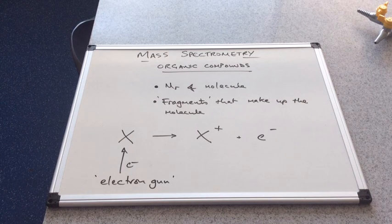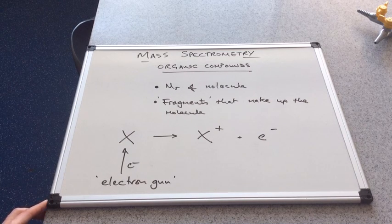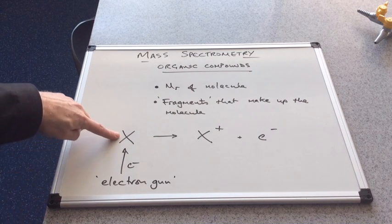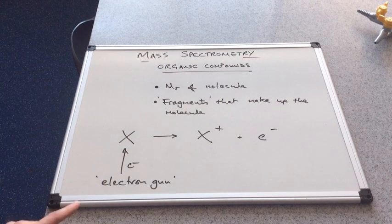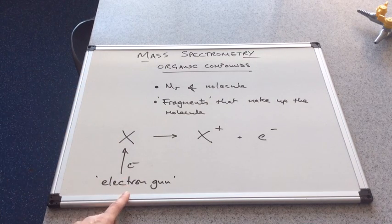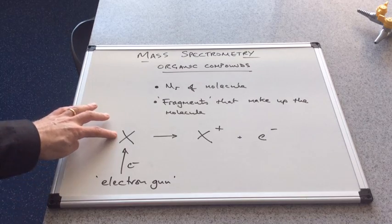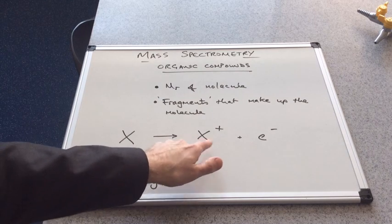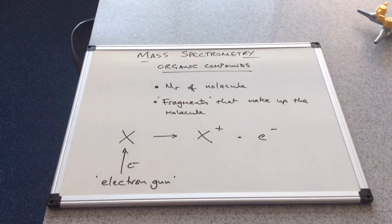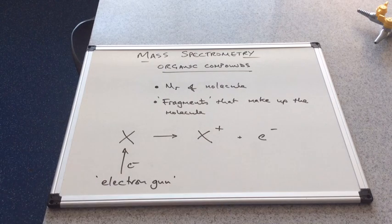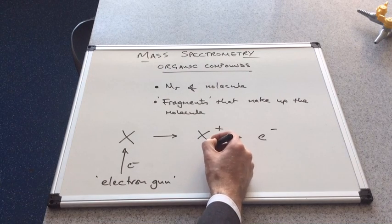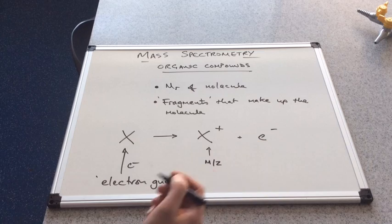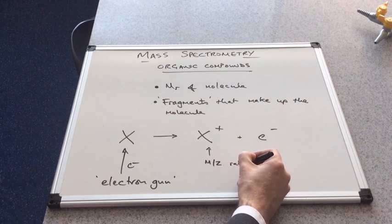The first thing to point out is just a little bit about how the process works. I'm keeping it very simple for the purpose of the video. The organic molecule, represented as X, is fired or bombarded with electrons from an electron gun. The purpose is to knock out an electron. It will put a positive charge onto X, and it's this that's going to be detected by the mass spectrometer. It's going to measure the mass-to-charge ratio, the M over Z ratio.